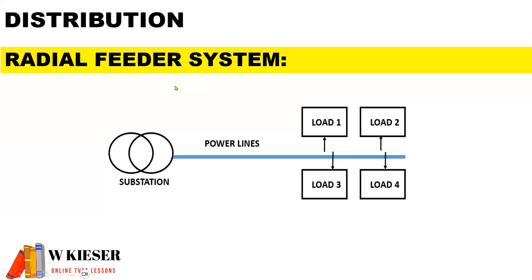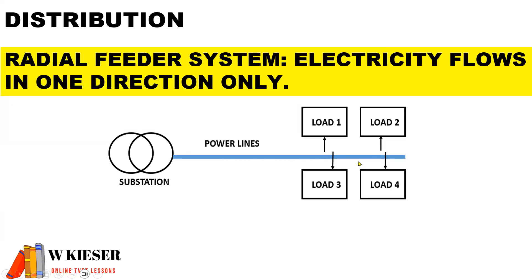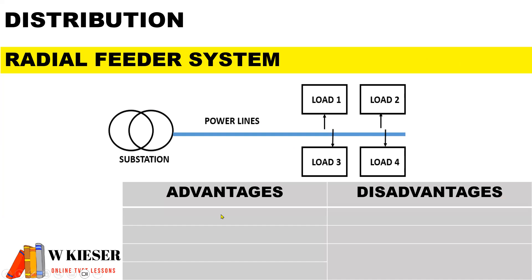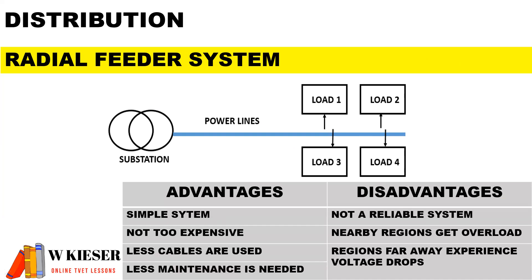For the radial feeder system, you'll notice that we have a single power line, and this allows electricity to flow only in one direction. In terms of the advantages, it is a simple system, not too expensive, less cables are used and less maintenance is required. However, for the disadvantages, it is not a reliable system. Nearby regions get overloaded and regions far away experience voltage drops.